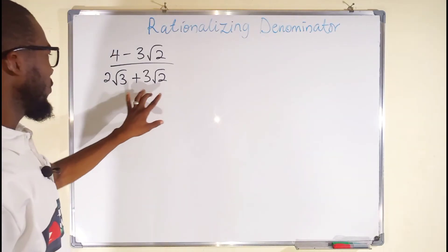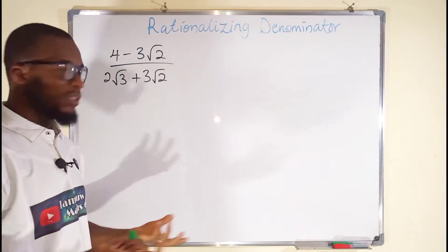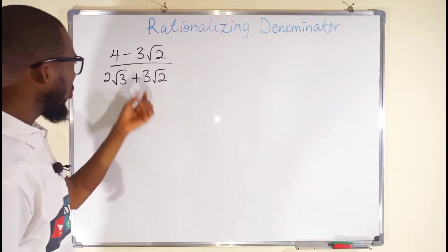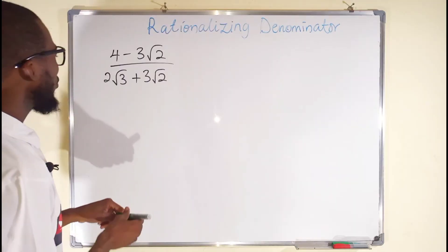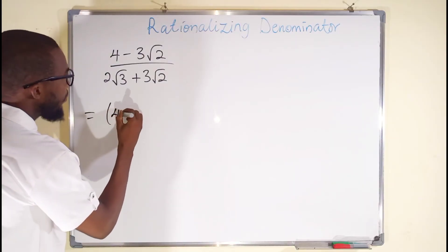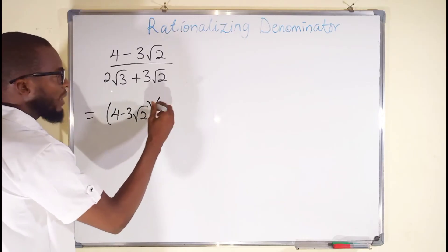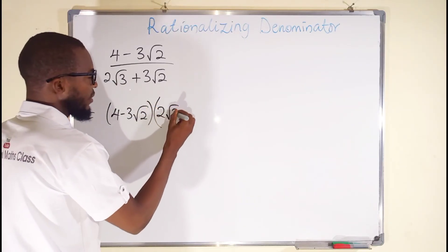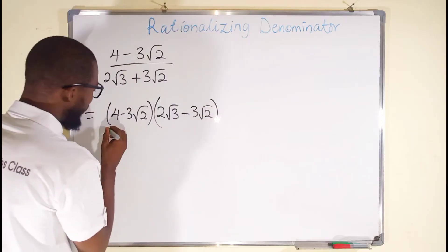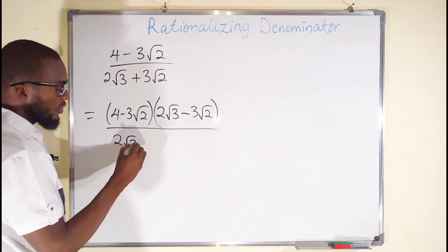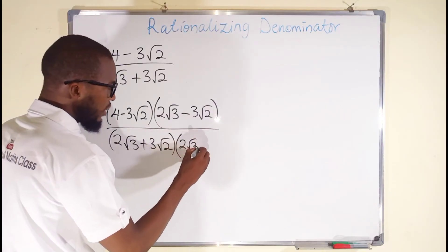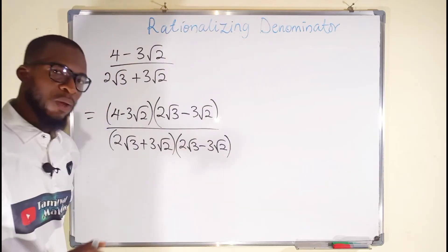Now let us take the last example. You can see these two binomial surds are all mixed surds, and we want to rationalize — we don't want to see any irrational number on the denominator. So we multiply the expression by its conjugate. We multiply the top and the bottom by the conjugate of the denominator. So we have 4 minus 3 root 2 multiplied by the conjugate of 2 root 3 plus 3 root 2, which is 2 root 3 minus 3 root 2. We do the same to the denominator: 2 root 3 plus 3 root 2, multiplied by the conjugate 2 root 3 minus 3 root 2.